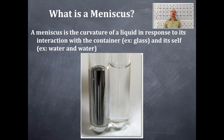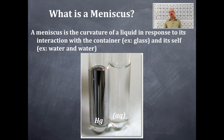Here's an example of two menisci. The one on the left-hand side is mercury, and you notice that that meniscus has a special shape to it. Mercury is quicksilver. And then the other meniscus on the right-hand side is an aqueous solution — so water, for example.